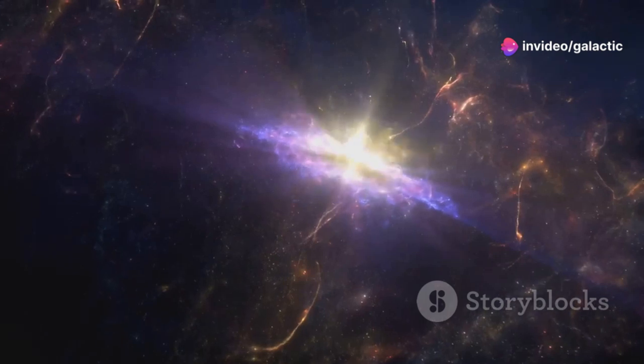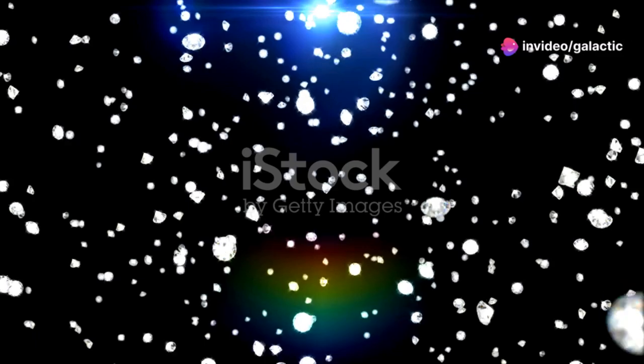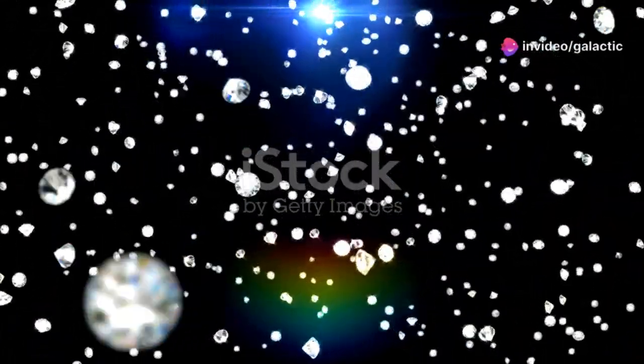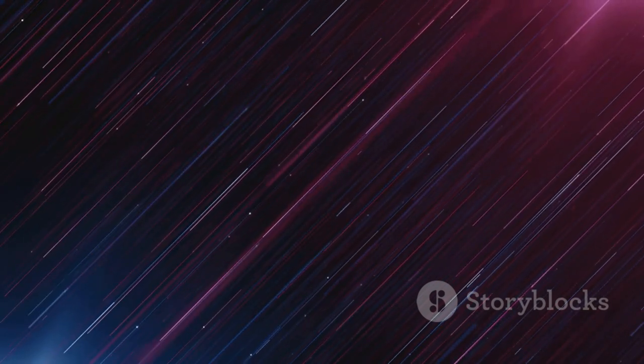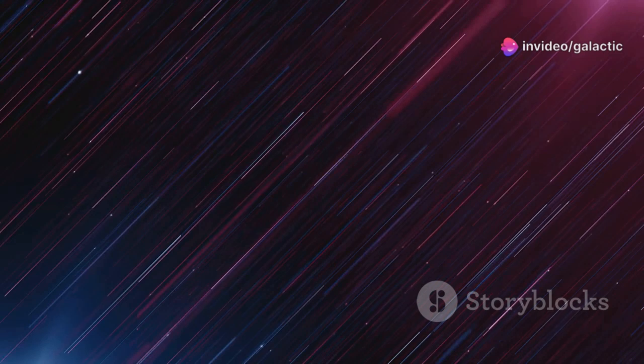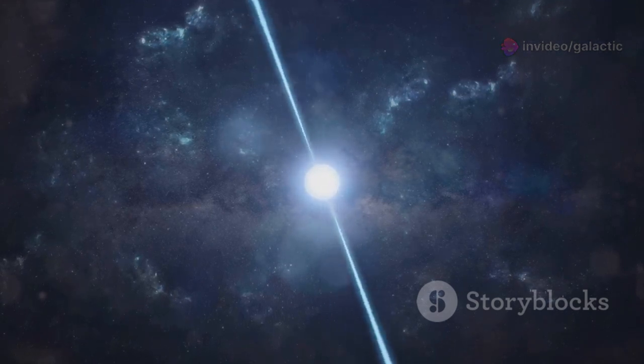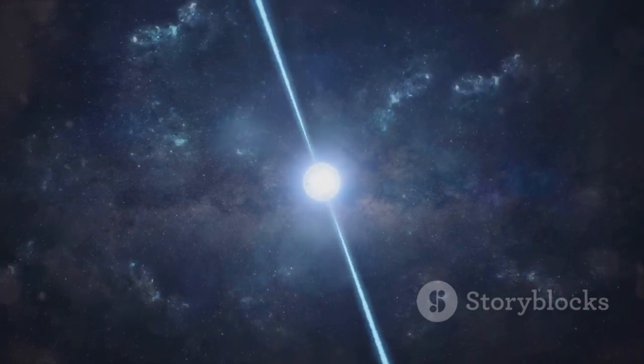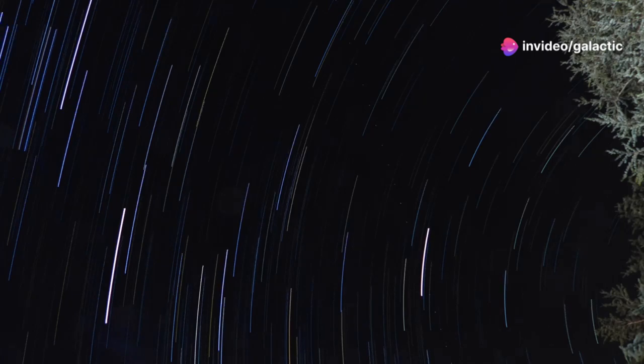Light is the messenger of the universe, carrying information across unimaginable distances. Every star, every galaxy, every cosmic event sends out light, and that light travels through the vastness of space until, eventually, it reaches us. You see, light travels incredibly fast, about 300,000 kilometers per second. But even at that speed, space is so vast that it can take years, centuries, or even billions of years for light to journey from distant objects to our telescopes. So when we gaze up at the night sky, we're not seeing stars and galaxies as they are right now, but as they were when their light first began its journey toward us.